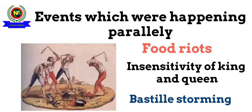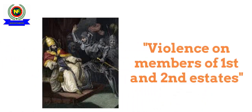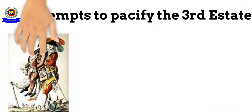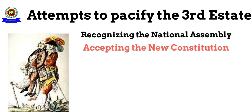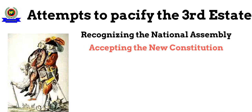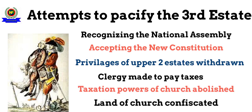This was followed by a harsh winter, which led to deterioration in the social order, and violent treatment of members of the first two estates, to the extent that many abandoned their homes and left France. In order to pacify the third estate, monarch Louis XVI took steps like recognizing and legitimizing the National Assembly and agreeing to abide by whatever the constitution declared. Further changes introduced in August 1789 included abolishing the privileges of the first and second estates, making the clergy pay taxes, abolishing the taxation powers of the church, and confiscating land owned by the church.